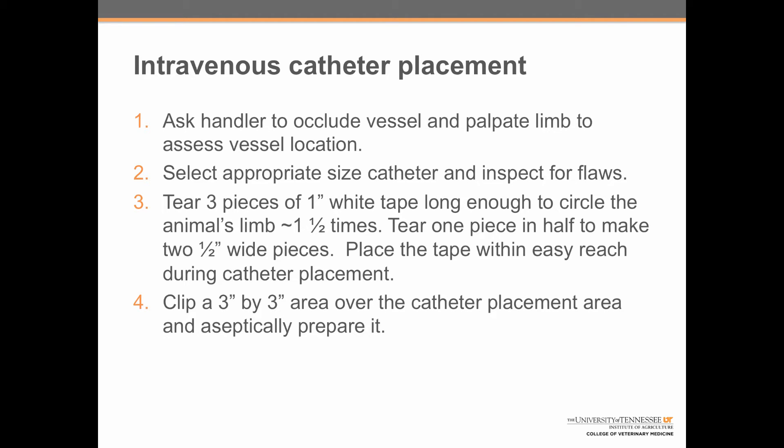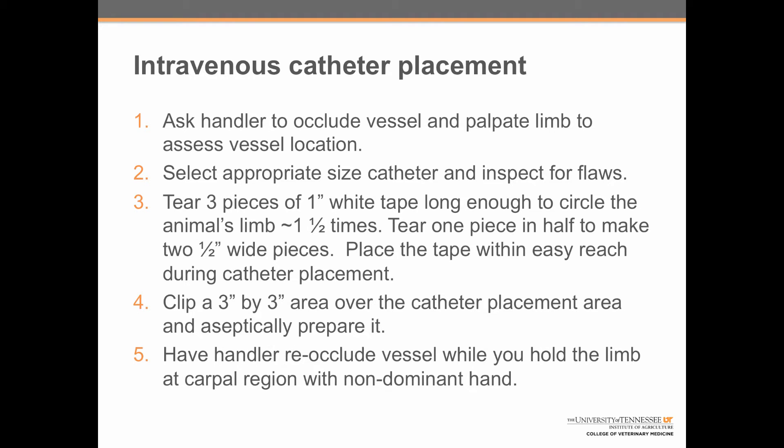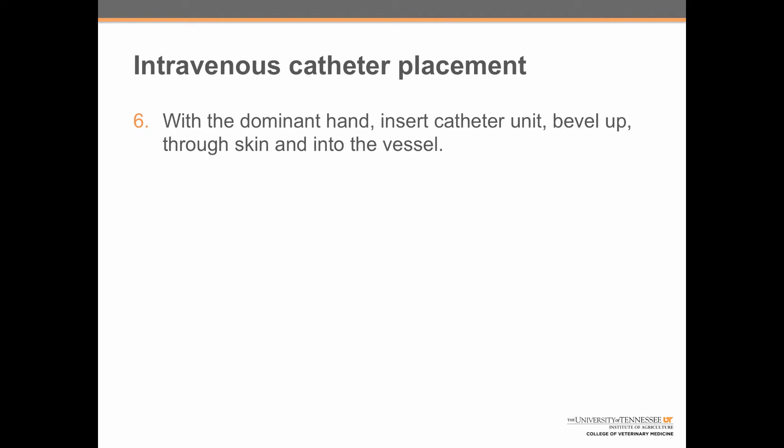Step 4: clip a three-inch-by-three-inch area over the catheter placement site and aseptically prepare it. Step 5: have the handler re-occlude the vessel while you hold the limb at the carpal region with your non-dominant hand. Step 6: using your dominant hand, insert the catheter unit bevel side up through the skin and into the vessel.